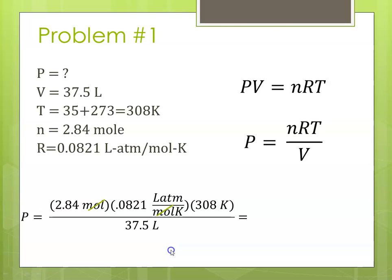Moles cancels out, liters cancels out, Kelvin cancels out. That's going to leave me with ATMs. When I plug it all in, I get 1.915 ATMs. Recall that we need 3 sig figs, so we should end with this 1. Since the number after it is a 5, I'm going to round that up to 1.92 ATMs.